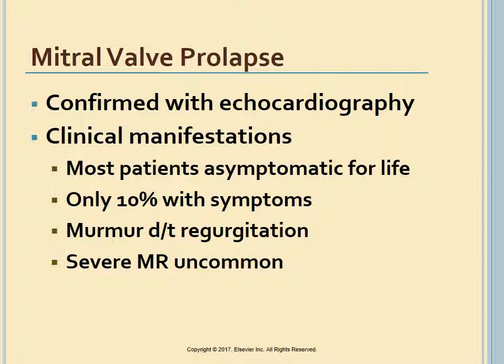M-mode and 2D echocardiography are used to confirm MVP. MVP covers a broad range of severity. Most patients are asymptomatic and remain so for their entire lives; about 10% become symptomatic. A characteristic finding is a loud murmur from regurgitation during systole. MVP does not alter S1 or S2 heart sounds. Severe mitral regurgitation is an uncommon but serious complication of MVP.